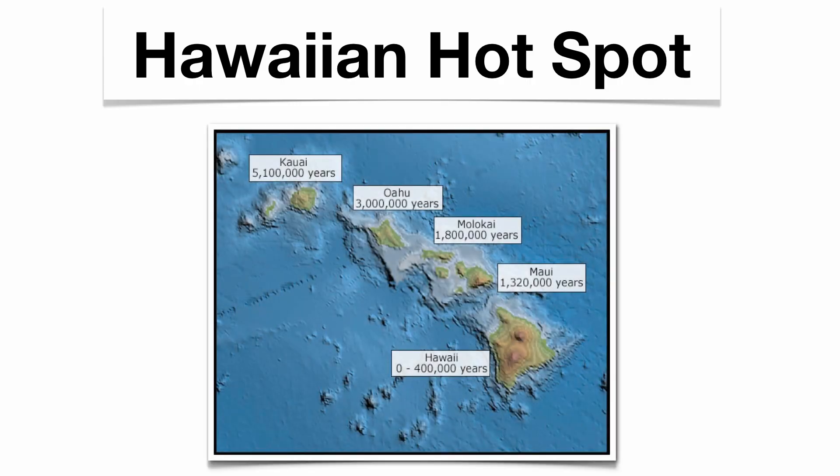The Hawaiian hotspot tends to be the most widely studied. Kauai is about 5 million years old, Oahu is 3 million, Molokai is 1.8 million, Maui is about 1.3 million, and Hawaii is the youngest. Kauai is the oldest and it's the smallest.